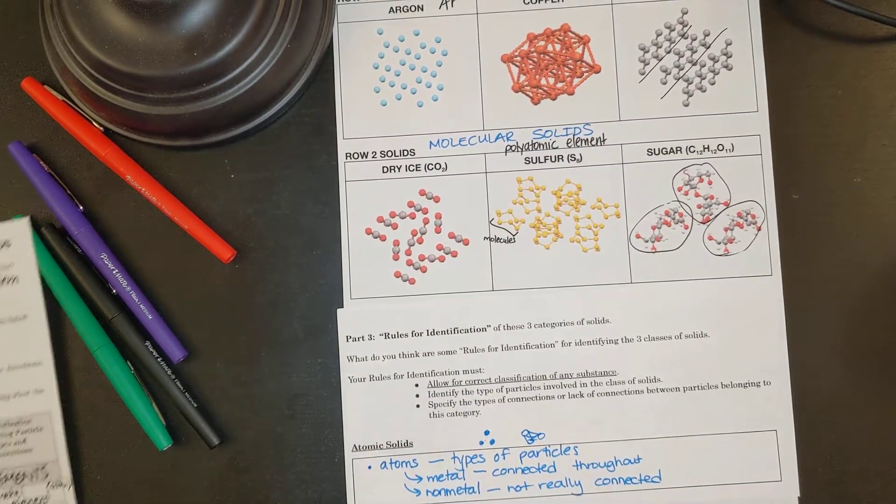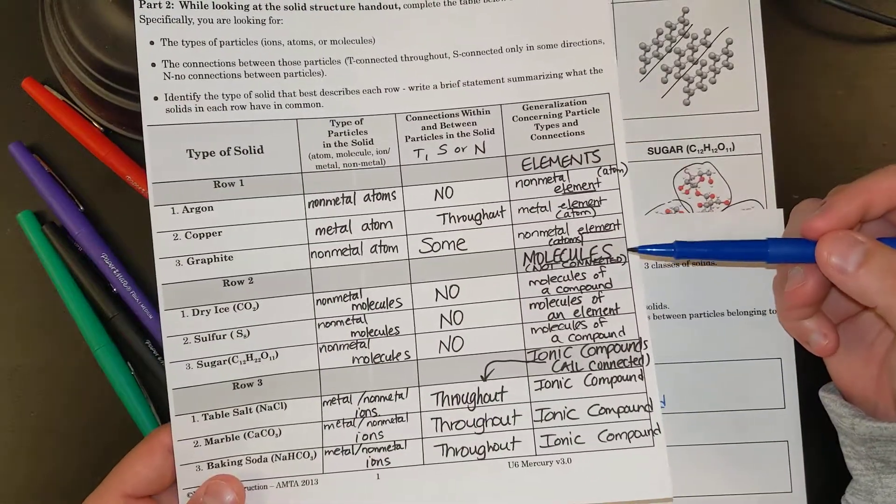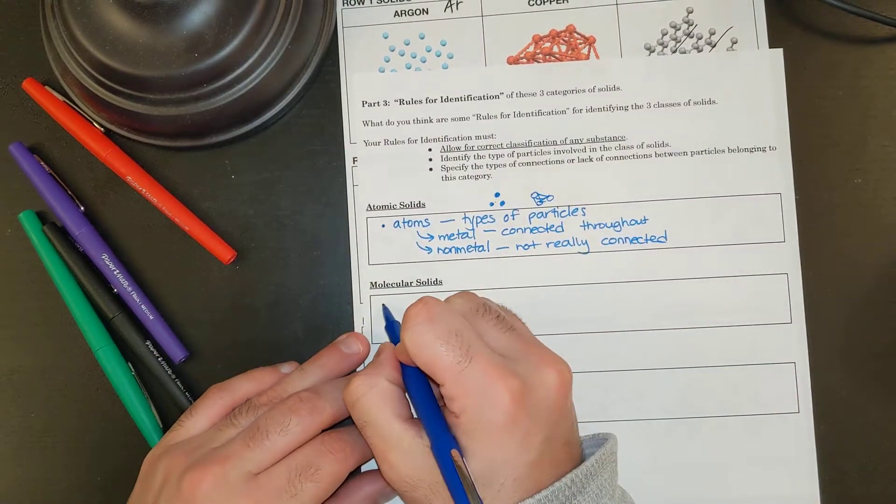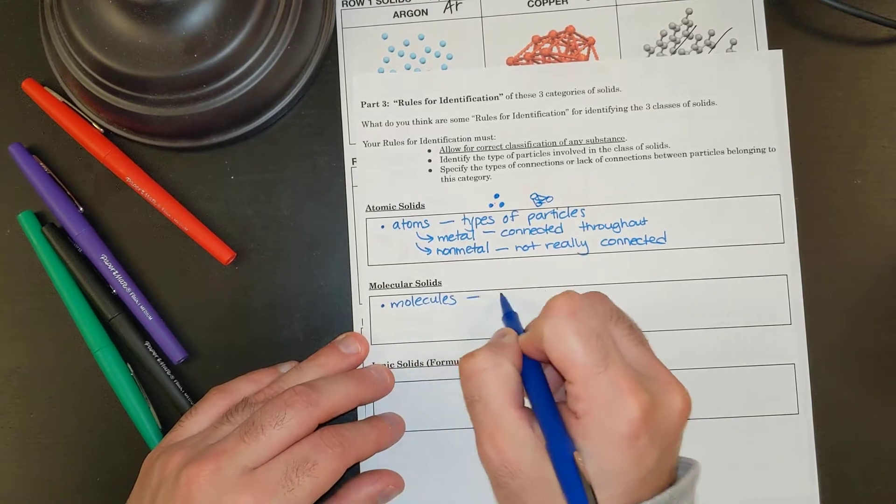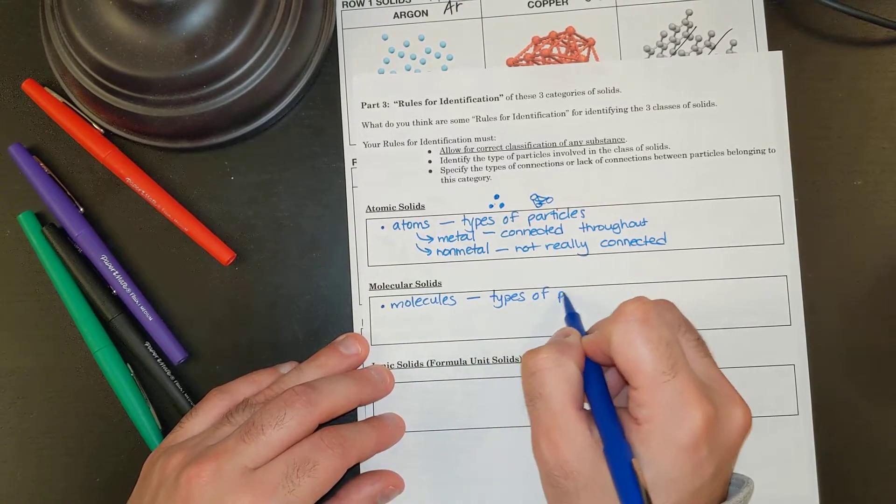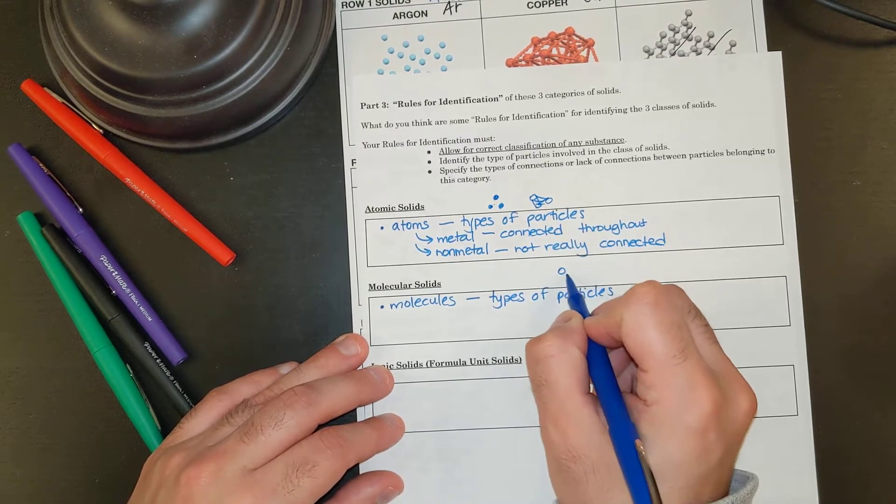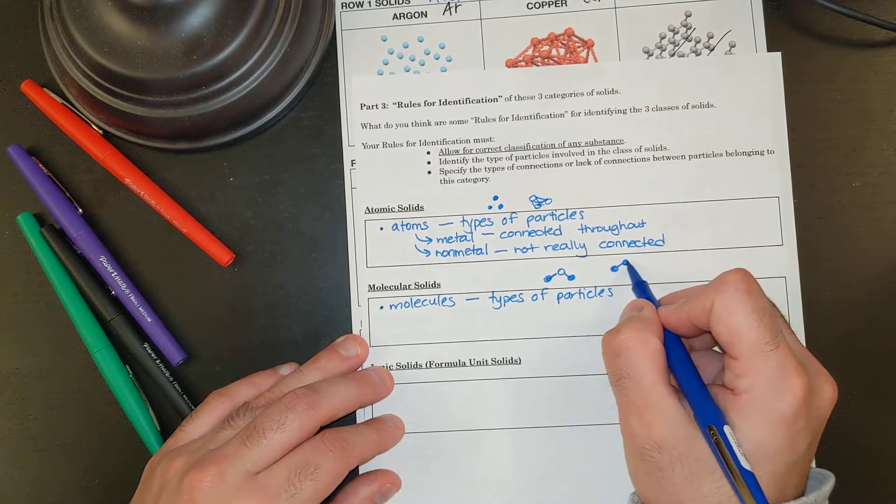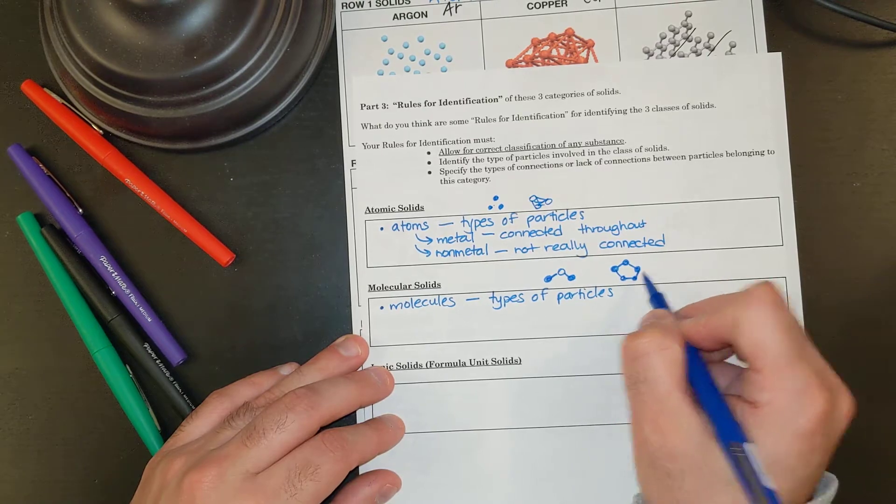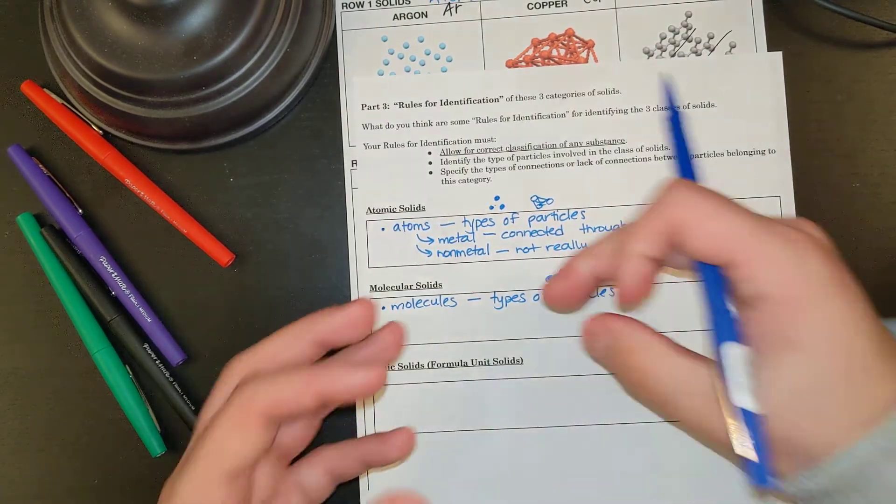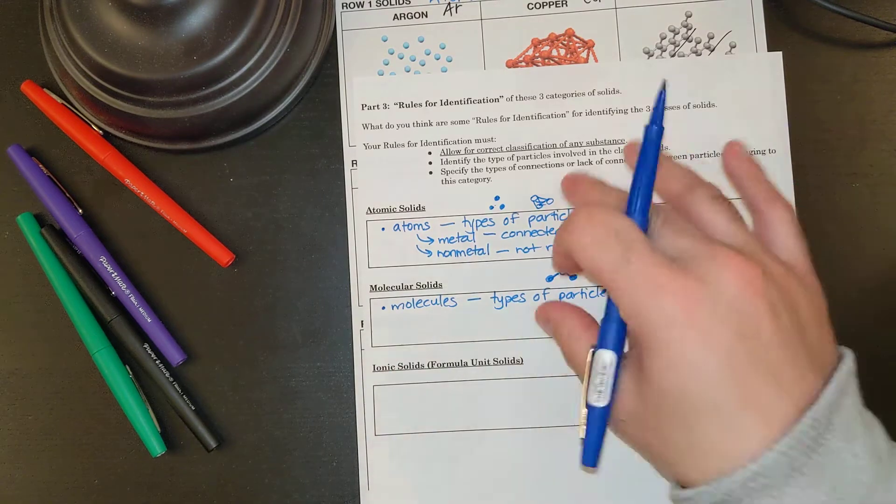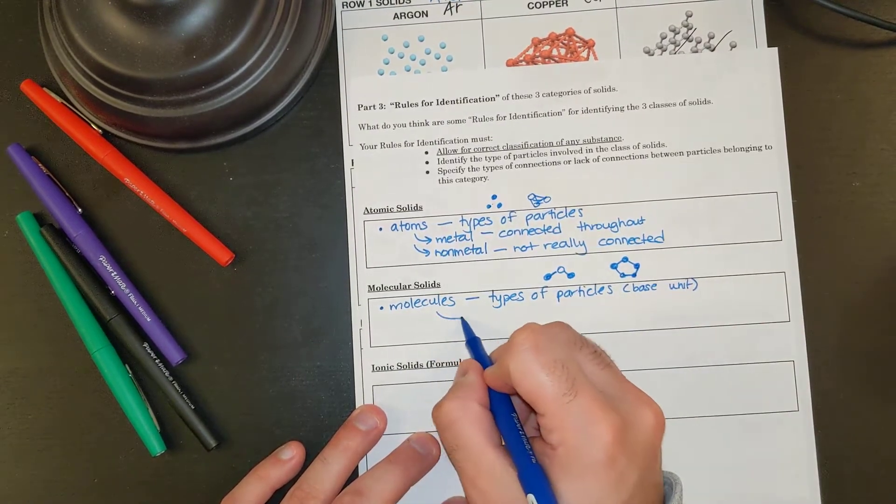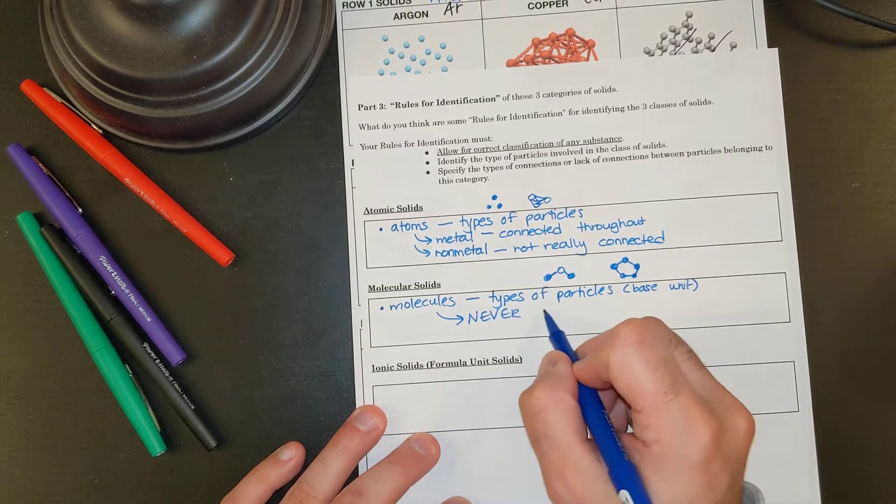All right, let's do molecular solids. So looking at our molecular solids, we actually had huge generalizations here. We said that the base unit aren't molecules, right? So we're going to say molecules are the types of particles. And so it'll look like maybe something like that, or maybe if we had something like that, doesn't matter. These are our types of particles, and they're going to be containing that as our basic particle. Types of particle is the base unit. And never connected.